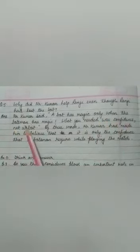Question number 5 that is the last question. Why did Mr. Kumar help Ranji even though Ranji had lost the bat? Mr. Kumar said a bat has magic only when the batsman has magic. What you needed was confidence not a bat. By these words Mr. Kumar had made him to believe that it is only the confidence that a batsman require while playing the match.